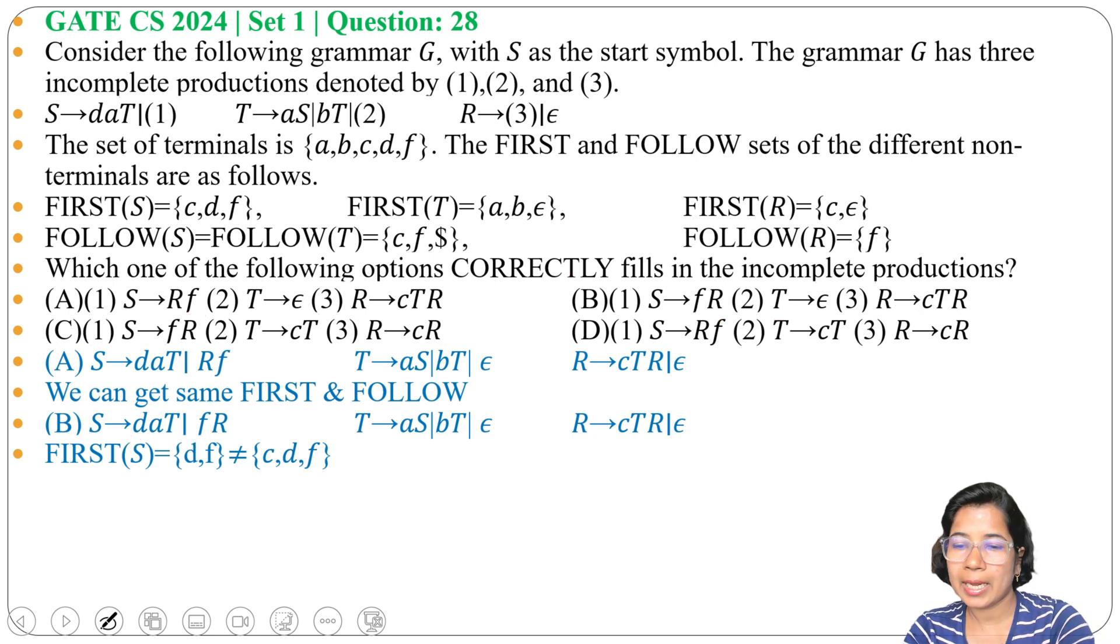Next check option C. S→FR. It's FR. For FR we already checked in option B. We are getting different first. So option C is also not the answer.